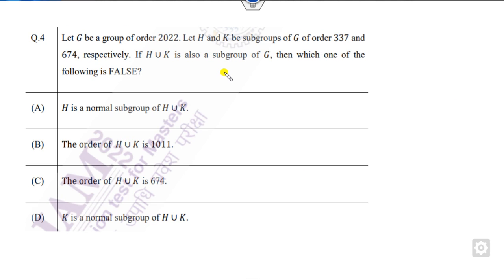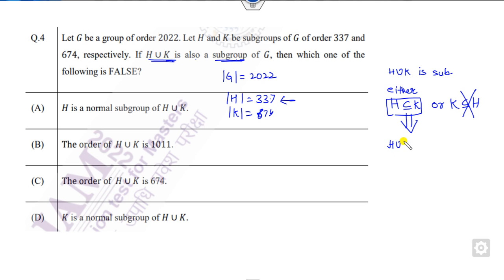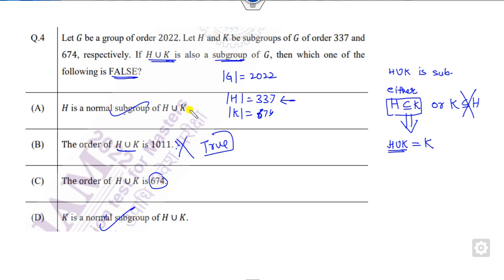The next question is about group theory. The order of the group is 20 or 22, order of H is 337, and order of K is 674. Then H∪K is also a subgroup. H∪K is a subgroup if and only if either H ⊆ K or K ⊆ H. Since the order of H is less than the order of K, H ⊆ K, so H∪K = K, and the order of H∪K equals the order of K. Also H is a normal subgroup. You need to find the false statement, so the correct answer is identified by elimination.